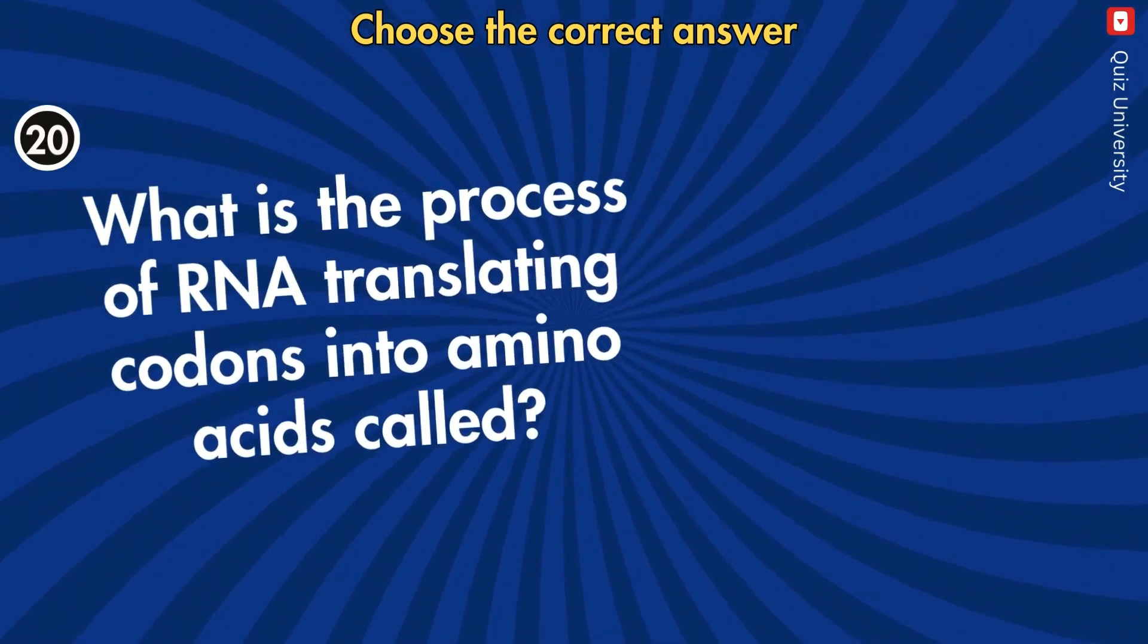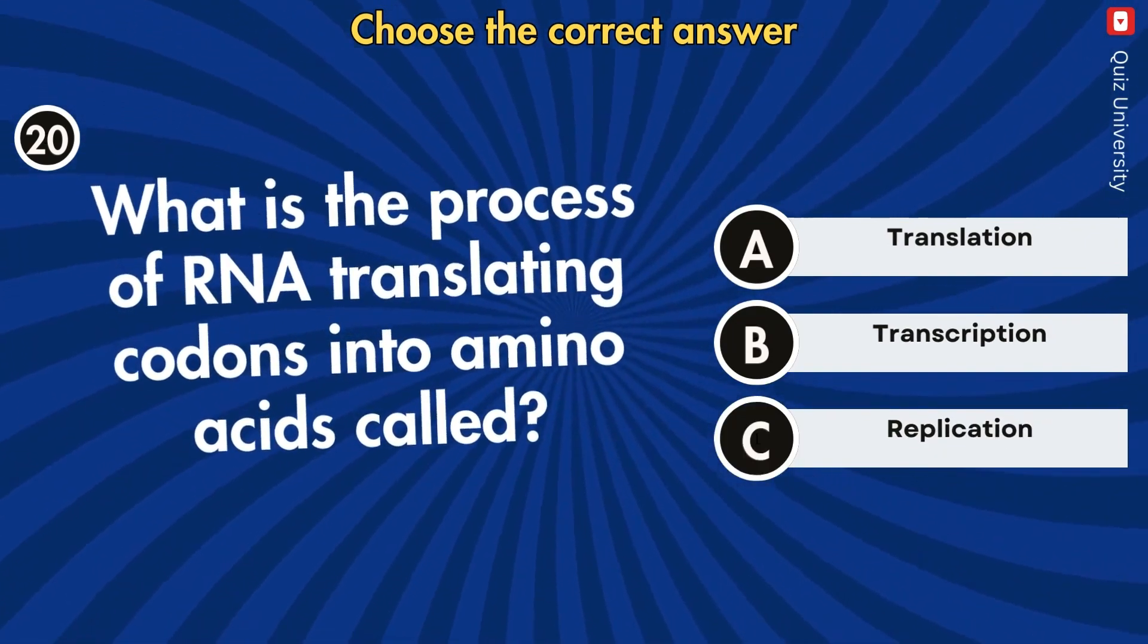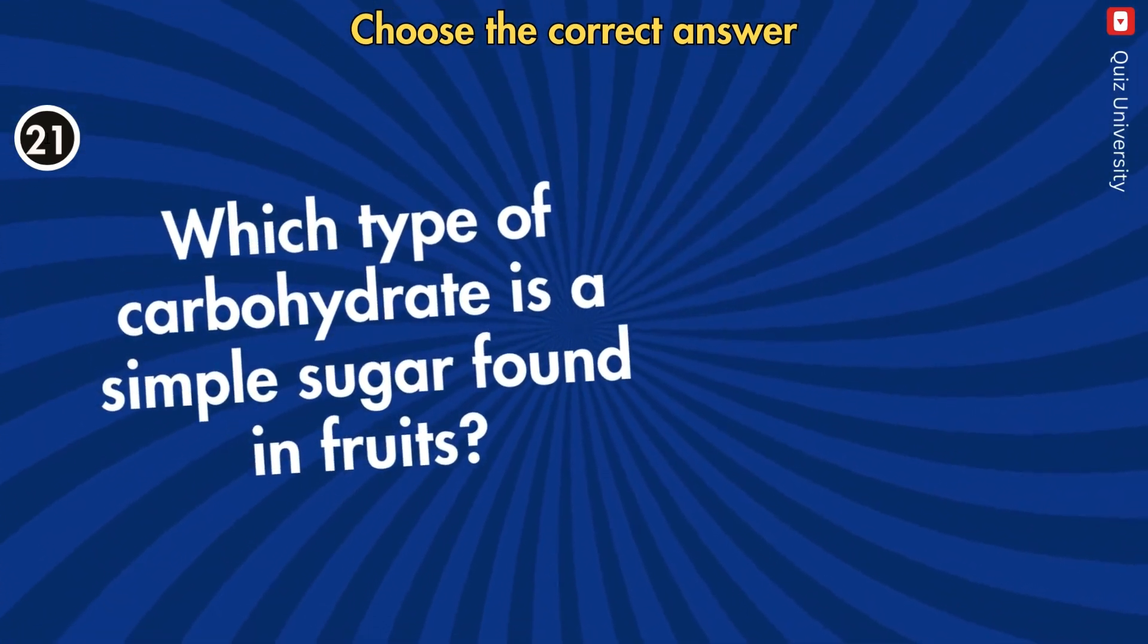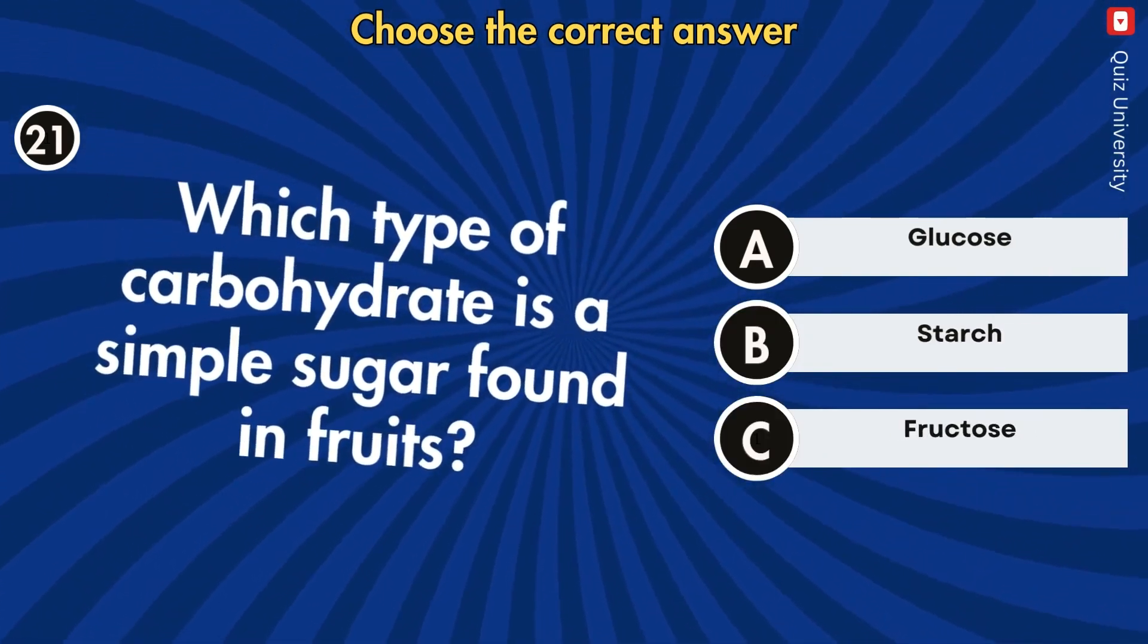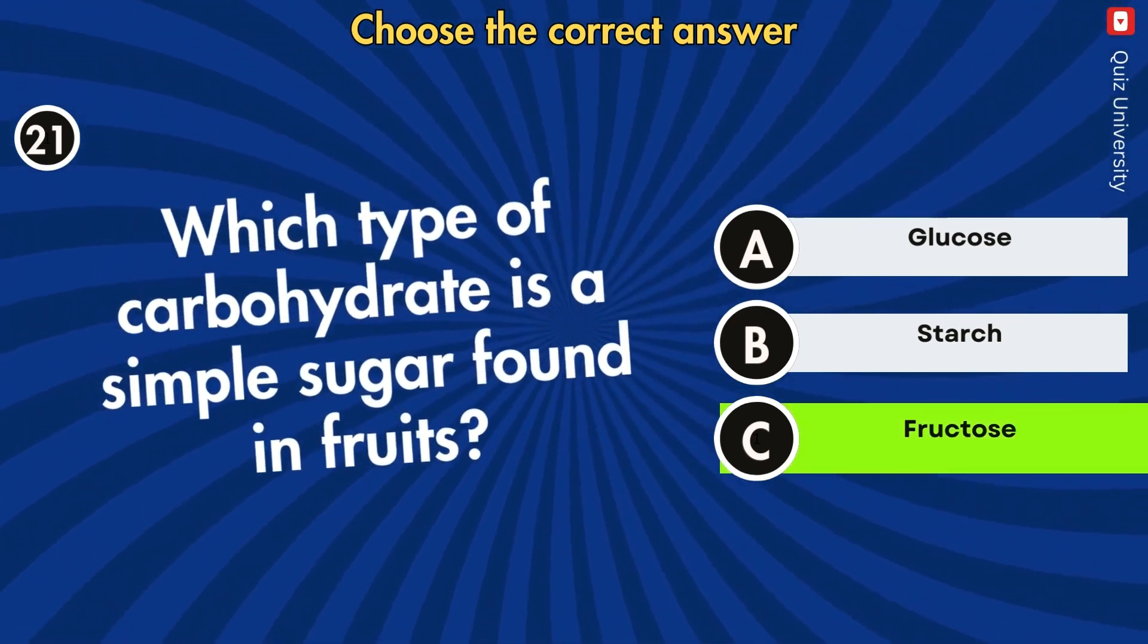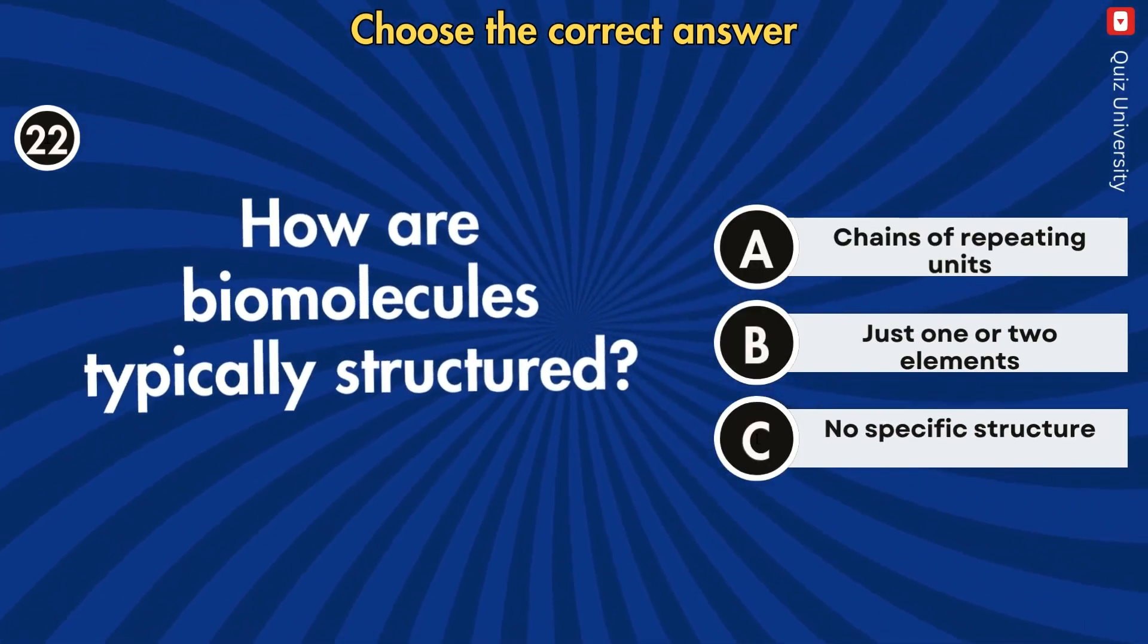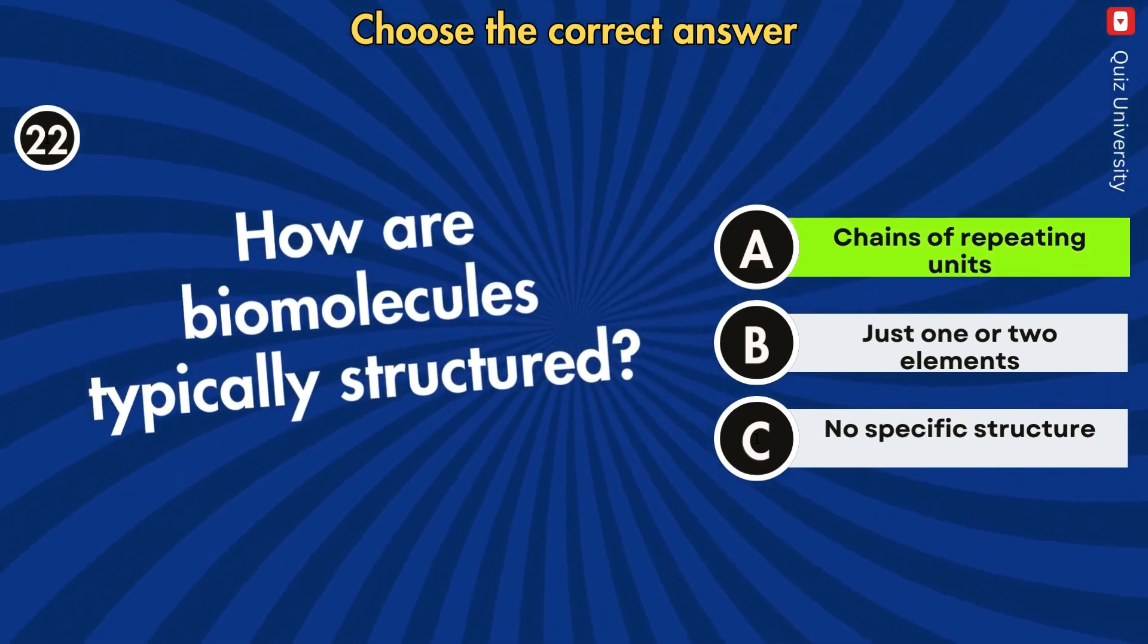What is the process of RNA translating codons into amino acids called? Which type of carbohydrate is a simple sugar found in fruits? How are biomolecules typically structured?